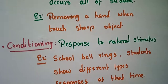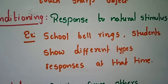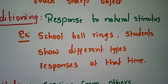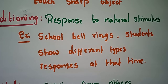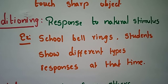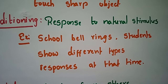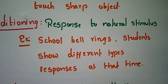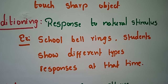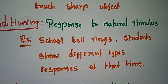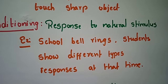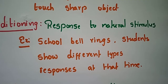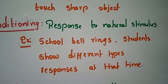Conditioning. Response to a natural stimulus. Example: the school bell rings. Immediately, students show different types of responses. So, whenever they hear that school bell, that response, they will give — conditionally.